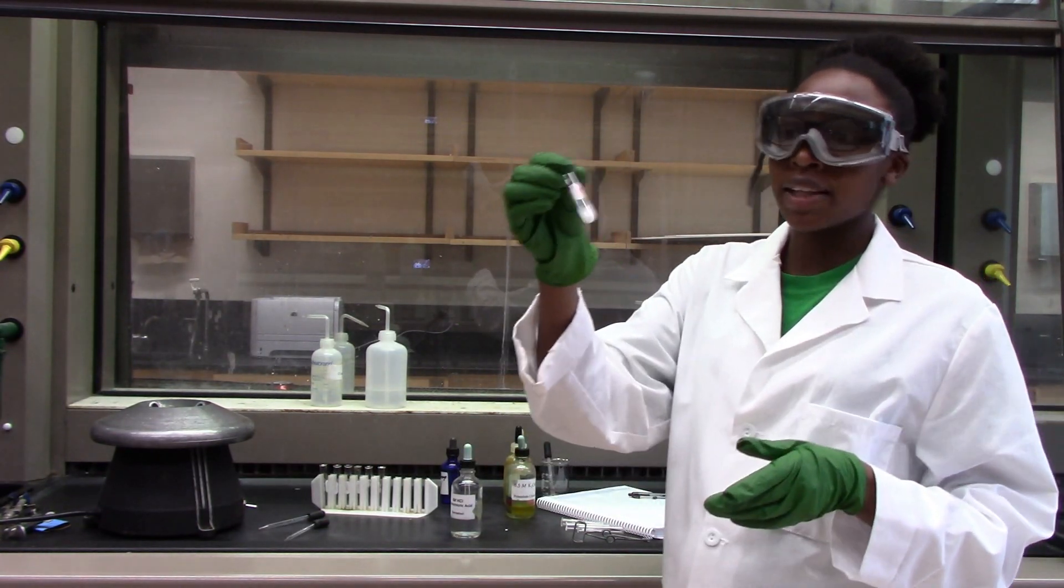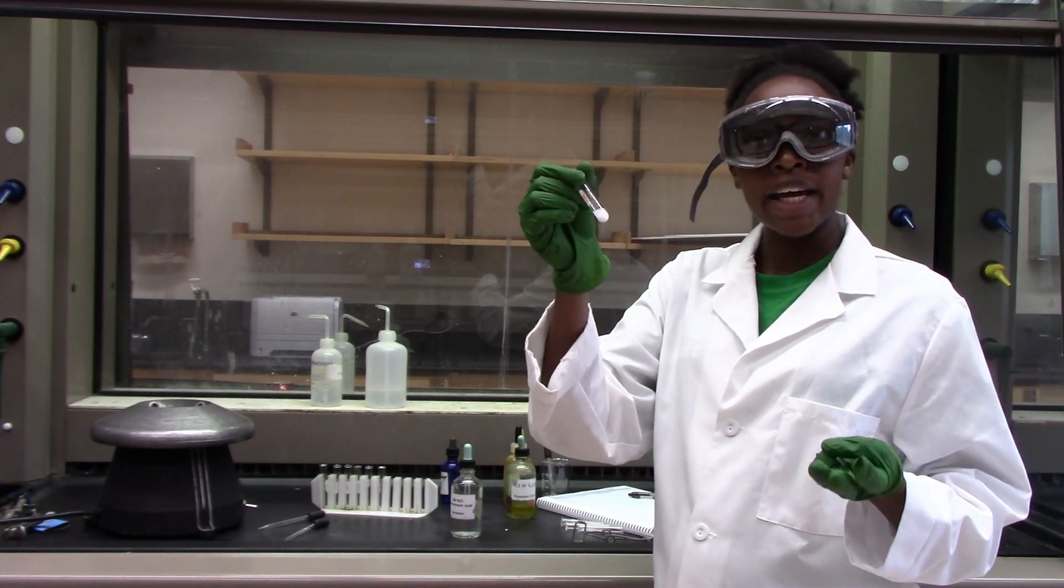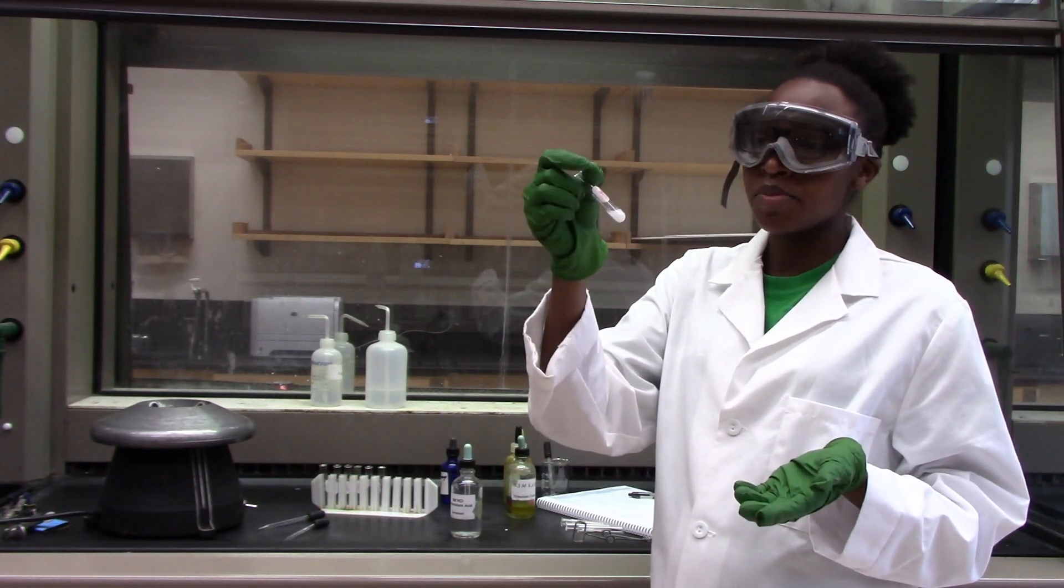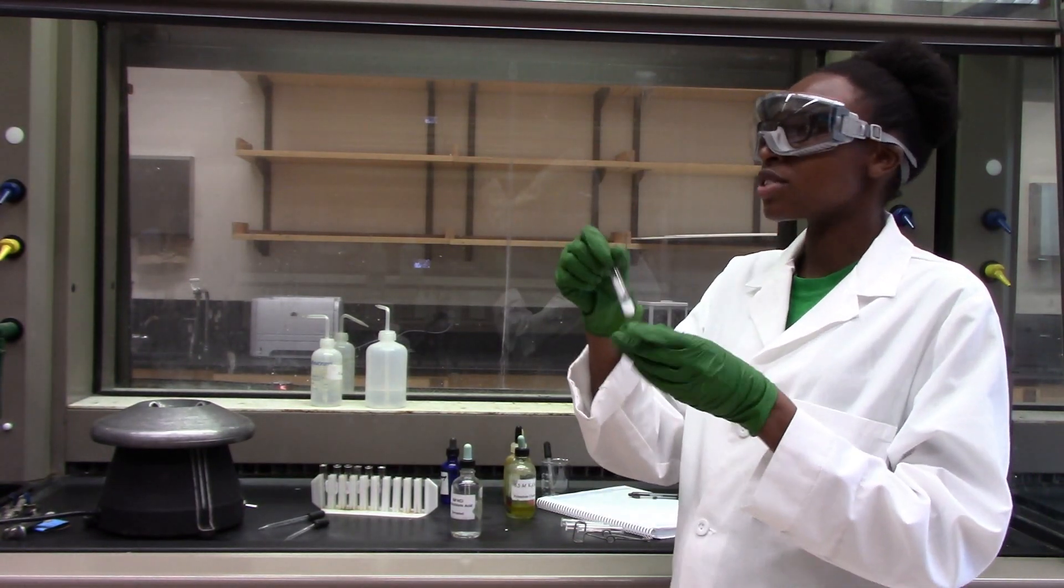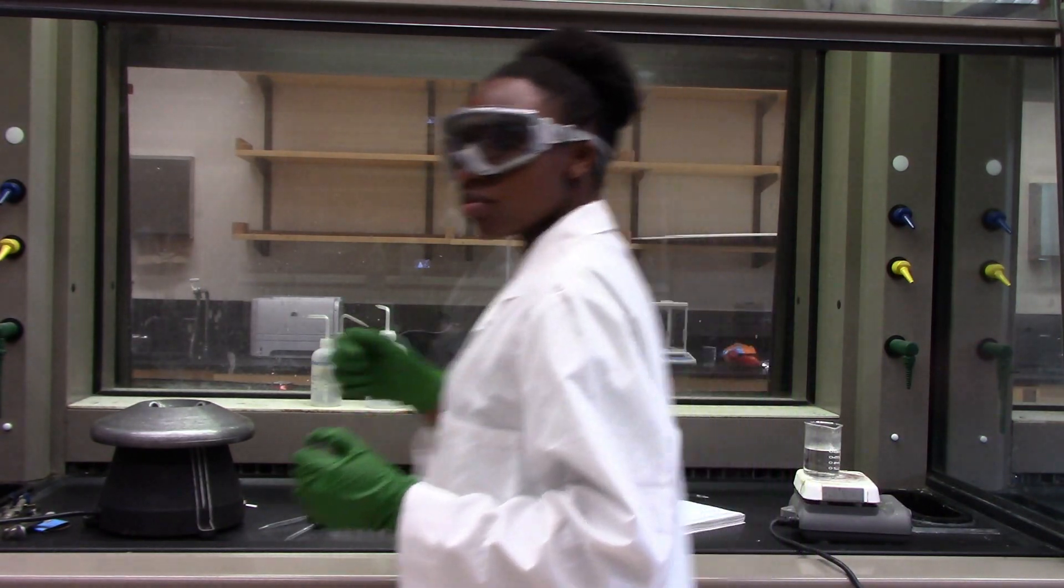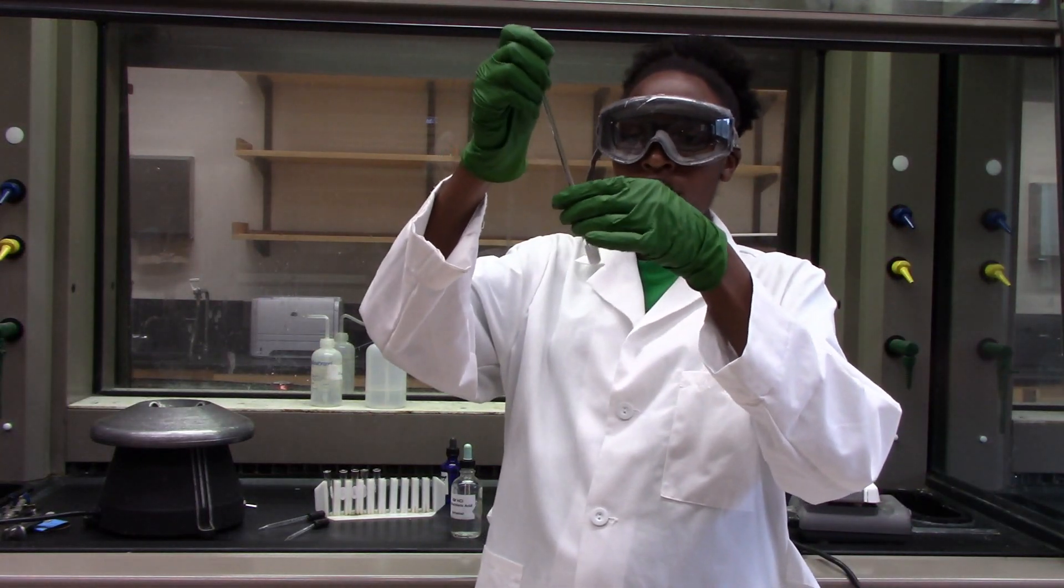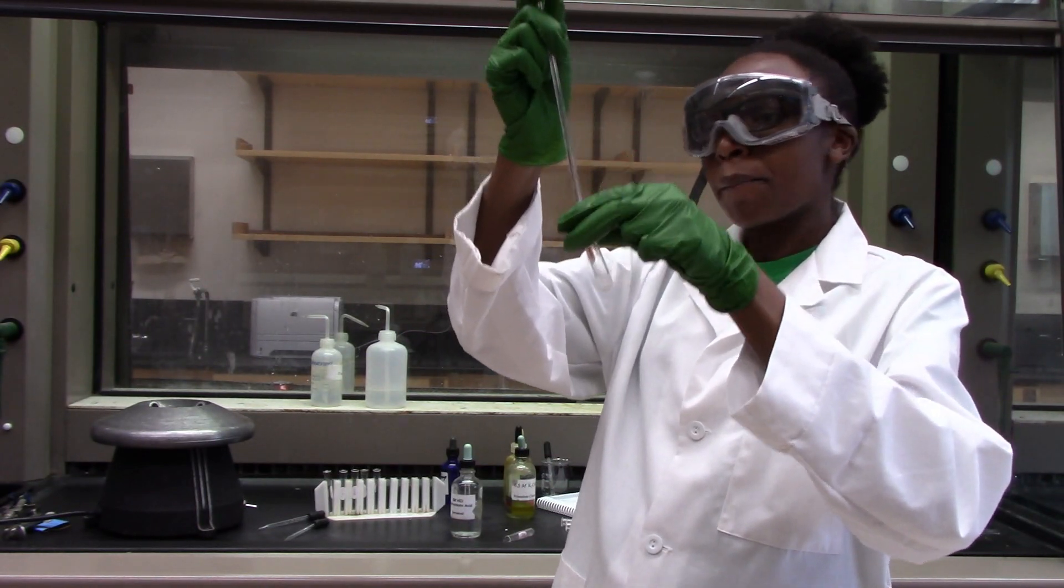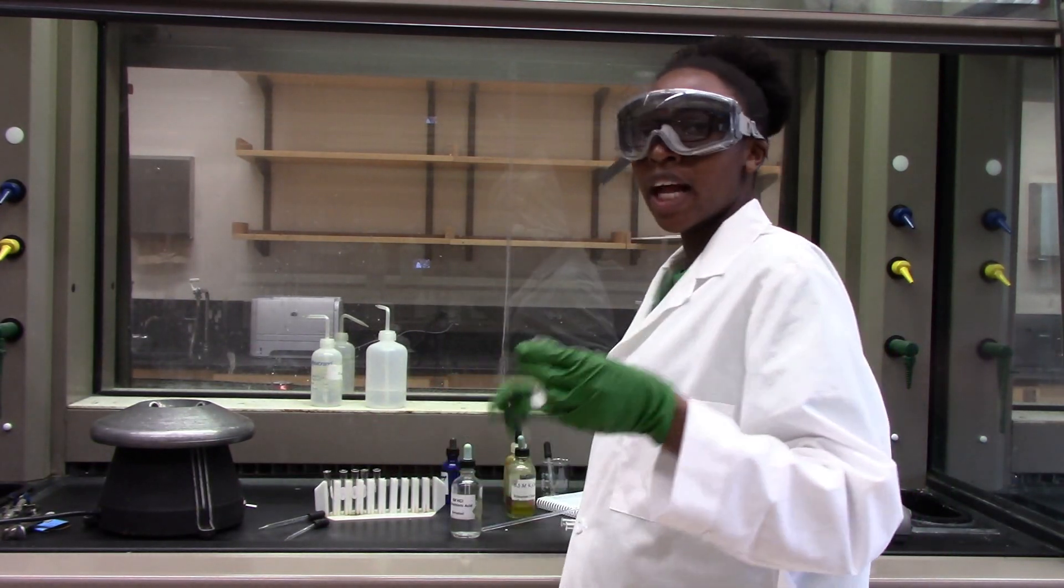Right away you can see that we have a white precipitate. That should tell us that there should be some either lead or silver or mercury or all of them in this precipitate. I am going to mix this and centrifuge it.